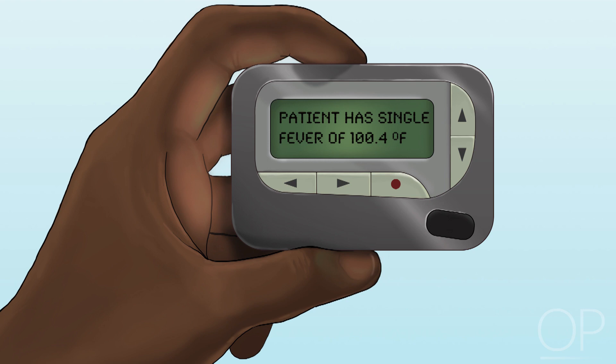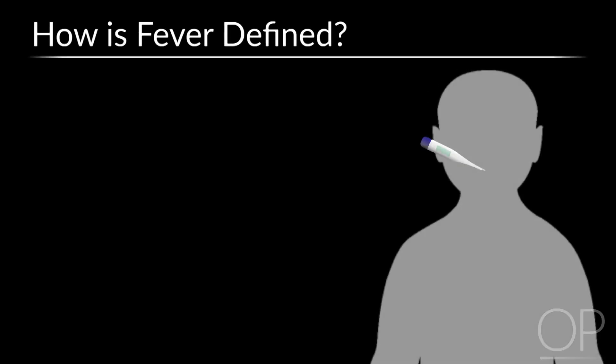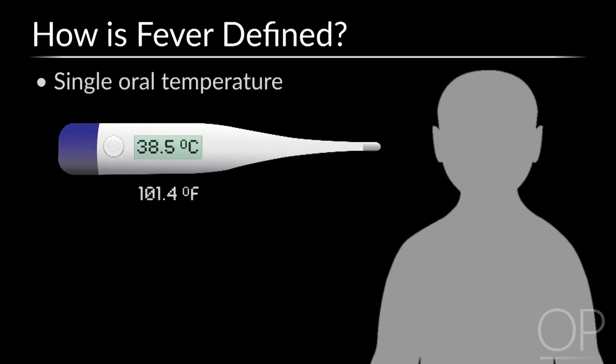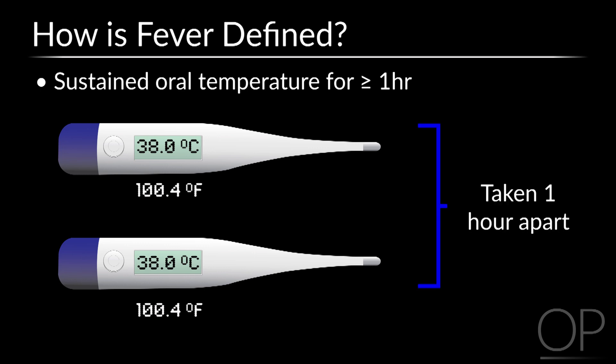One of your patients has a single fever to 100.4 degrees Fahrenheit. How do you know what to do? First, how do we define fever in the oncology population? Fever is defined as a single oral temperature of at least 38.5 degrees Celsius, which is equivalent to 101.4 degrees Fahrenheit, or a sustained oral temperature of greater than or equal to 38.0 degrees Celsius, or 100.4 degrees Fahrenheit, for greater than one hour. A sustained temperature is demonstrated by two separate temperature measurements at least one hour apart.